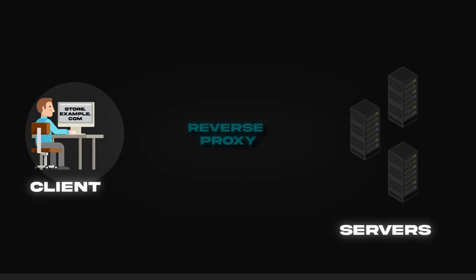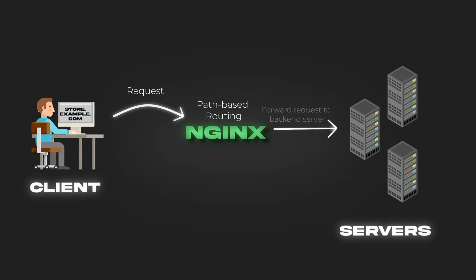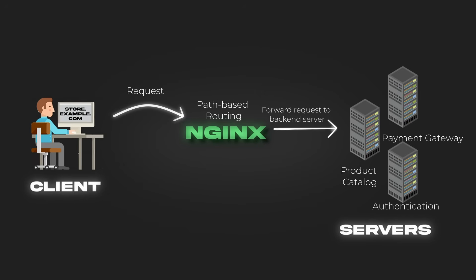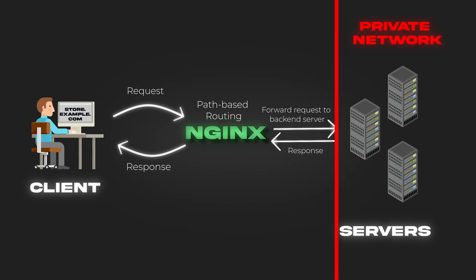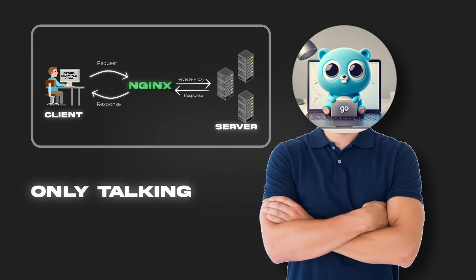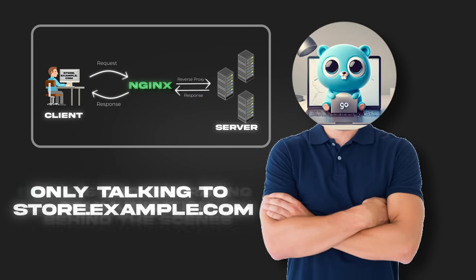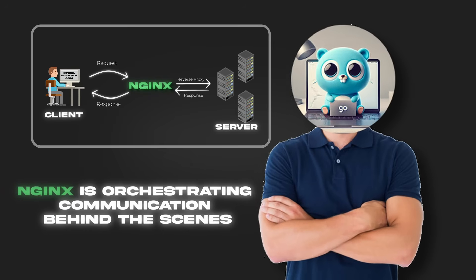For example, if you visit store.example.com, your request might hit an Nginx reverse proxy hosted at the domain. Nginx checks the path and routes it to the appropriate microservice — perhaps a product catalog backend or a payment gateway. The backend service may be hosted on a private network and not exposed to the internet directly. From the client's perspective, they're only talking to store.example.com, but Nginx is orchestrating all communication behind the scenes.